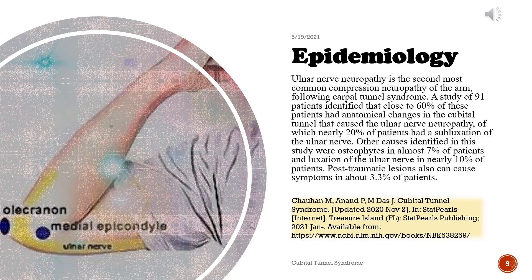Epidemiology. Ulnar nerve neuropathy is the second most common compression neuropathy of the arm, following carpal tunnel syndrome. A study of 91 patients identified that close to 60% had anatomical changes in the cubital tunnel causing ulnar nerve neuropathy, of which nearly 20% had subluxation of the ulnar nerve. Other causes included osteophytes in almost 7% of patients, laxity of the ulnar nerve in nearly 10%, and post-traumatic lesions in about 3.3%.